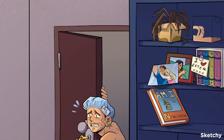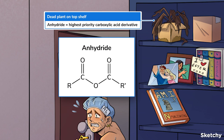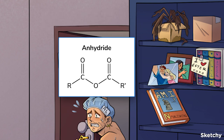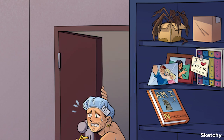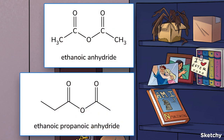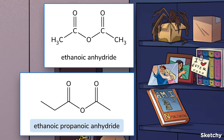Anhydrides are the highest priority carboxylic acid derivative we'll cover. Anhydride means "without water," so we've represented them with this plant that's definitely been without water for quite a long time. Anhydrides are very closely related to carboxylic acids — they're formed by two carboxylic acid molecules reacting and giving off water as a product, hence the two cardboard boxes on this top shelf. Symmetric anhydrides, formed from two identical carboxylic acids, are named with the suffix oic anhydride. But if they're formed with two different carboxylic acids, they have names like ethanoic propanoic anhydride, where we name-check both carbon chains before the final anhydride.